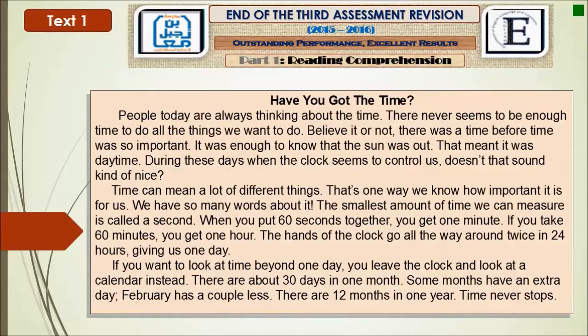Time can mean a lot of different things. That's one way we know how important it is for us — we have so many words about it. The smallest amount of time we can measure is called a second. When you put 60 seconds together, you get one minute. If you take 60 minutes, you get one hour. The hands of the clock go all the way around twice in 24 hours, giving us one day. If you want to look at time beyond one day, you leave the clock and look at a calendar instead.